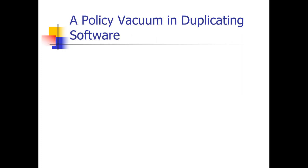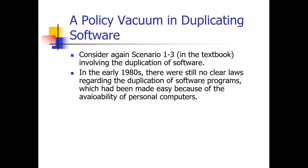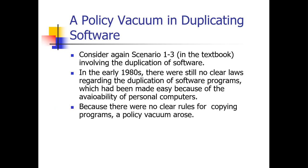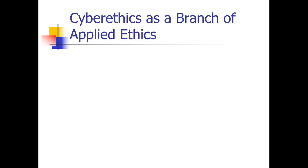In these cases, conceptual models will first need to be clarified before clear policies can be formalized and justified. What about the vacuum regarding duplicating software? In scenario 1.3, we looked at duplicating software. In the early 80s, there were no clear laws regarding the duplication of software programs because the court system wasn't there yet. Because there were no clear rules for copying programs, that's where the policy vacuum actually arose. Before the policy could be filled, a conceptual model had to be clarified — what exactly is software, and how do we define it? We have to have a working definition before we can actually work on it.